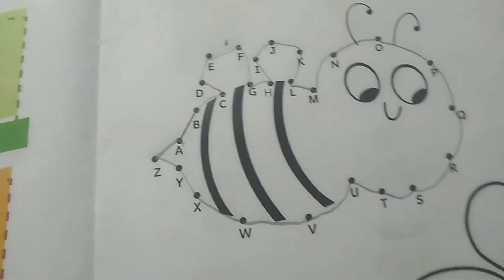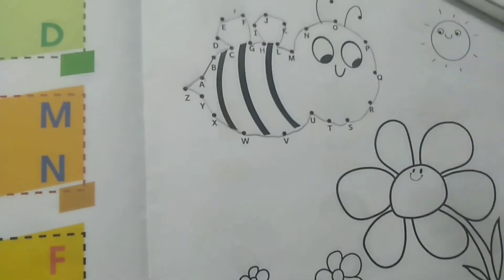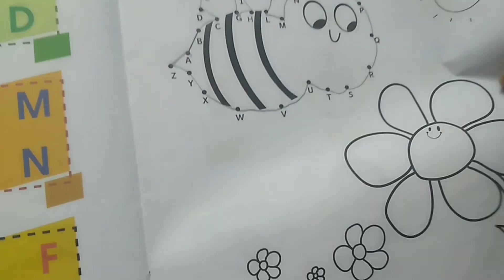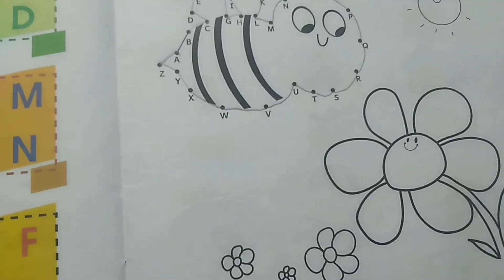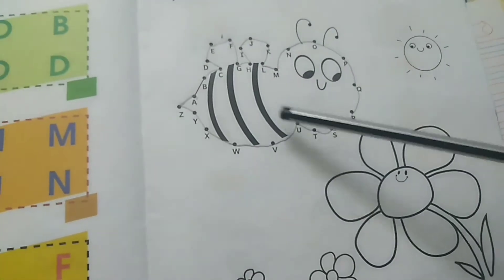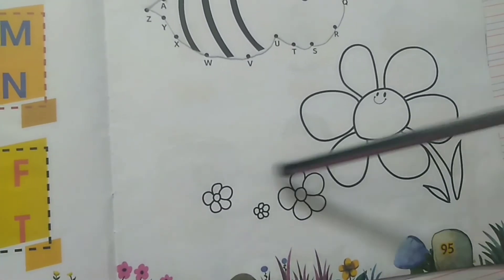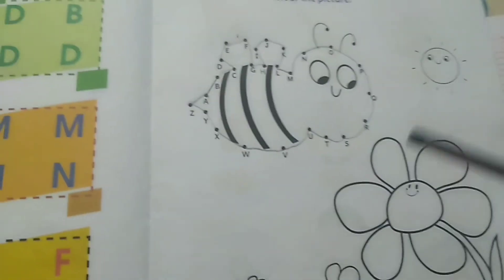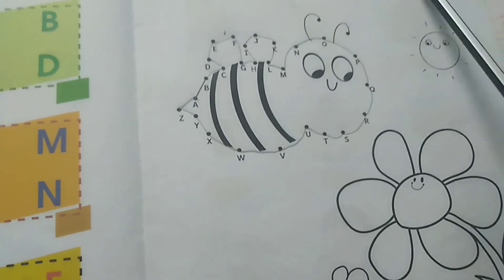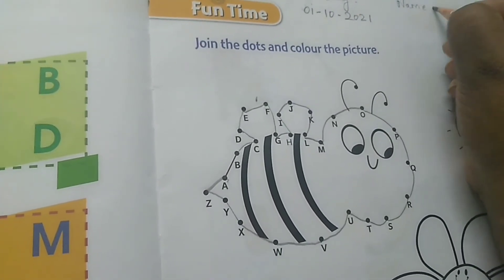Fine, this is the activity. Color the picture very neatly. This coloring is going to be considered for your drawing assessment. Drawing and coloring assessment is there. Coloring, we are not going to give separately. Color this bee, the sun, and the flowers. Beautifully you color. Don't go out of the line, make it nice. And write your name before you send.